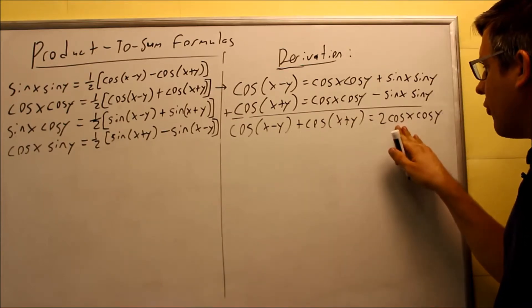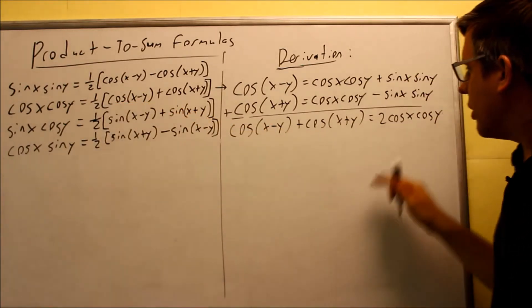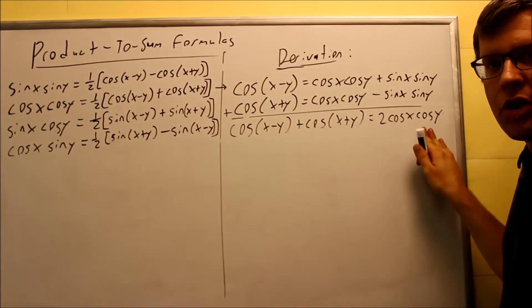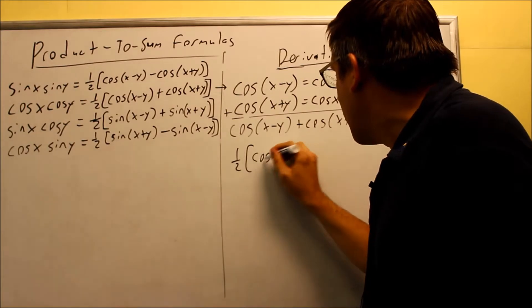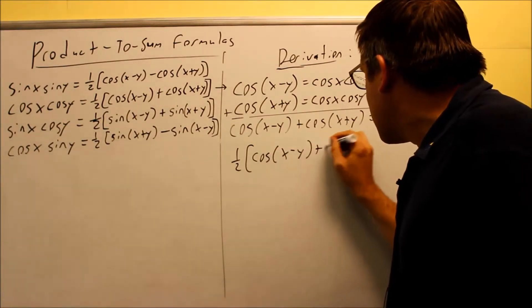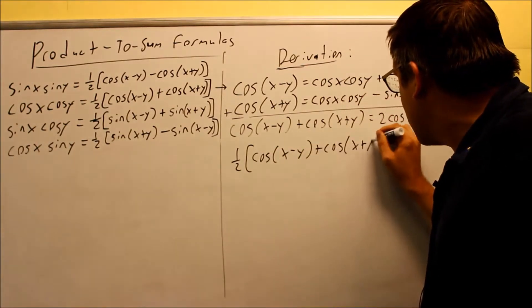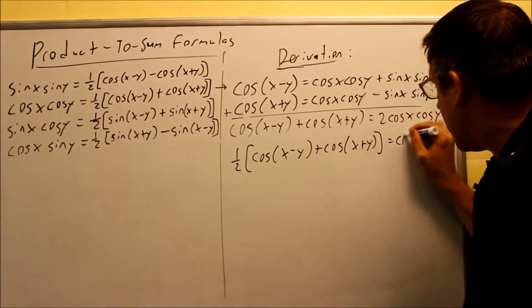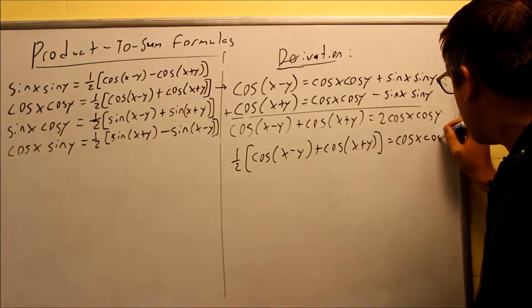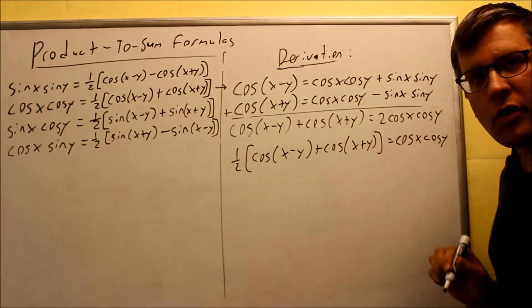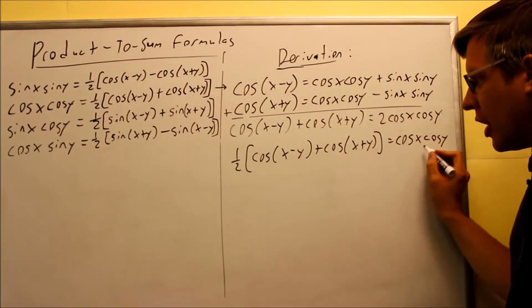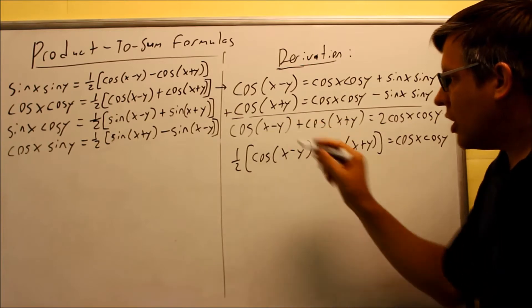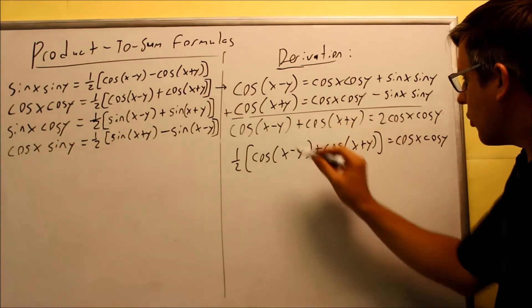If I want to solve for cosine(x)cosine(y), which is what we're trying to do here, then all you're going to do is divide the whole thing by 2, which is the same thing as taking one half of the whole thing. So now this is it. This is basically the derivation. We've shown where these come from. Basically these are just another form of the sum and difference formulas, just solving for the product instead of for the individual sum itself.